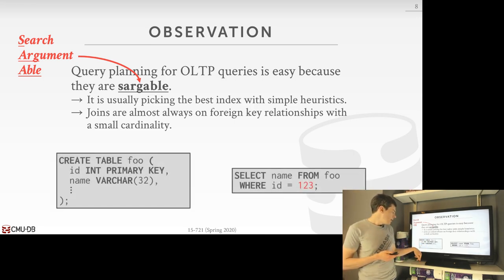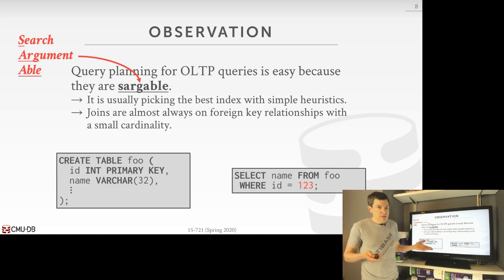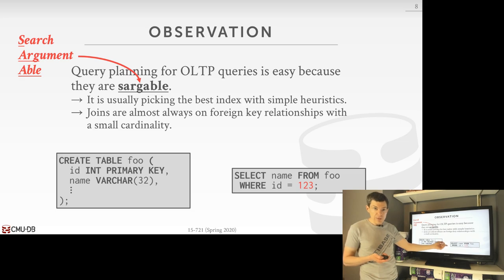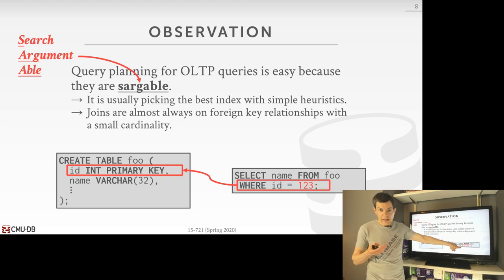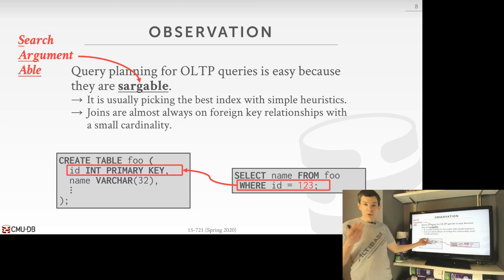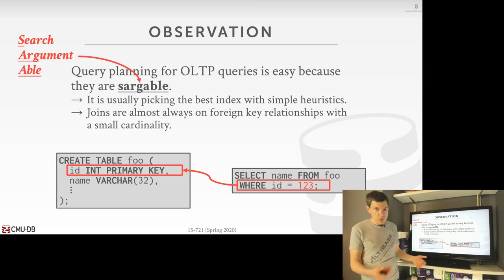For example, say table foo has columns ID and name, where ID is the primary key. If a query comes along with an equality predicate where ID equals 123, there's no complex search needed — you look at the catalog, see you're doing an equality predicate on the ID field which has a primary key index, so you just use that index. You don't even need to consider other possible indexes.